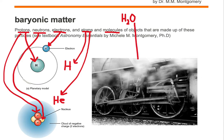Here we see steam coming from the steam engine. It's an example of a molecule that is also an example of baryonic matter. The steam engine is made up of particles, atoms, and molecules that are baryonic matter.